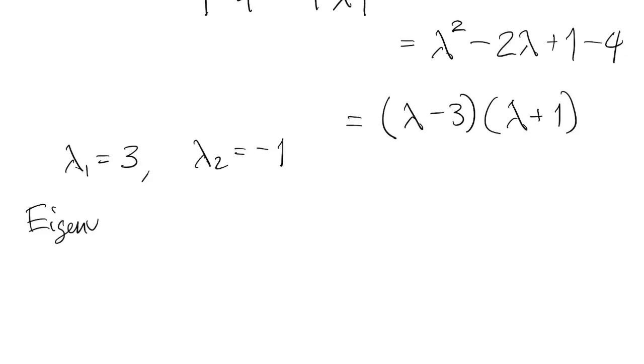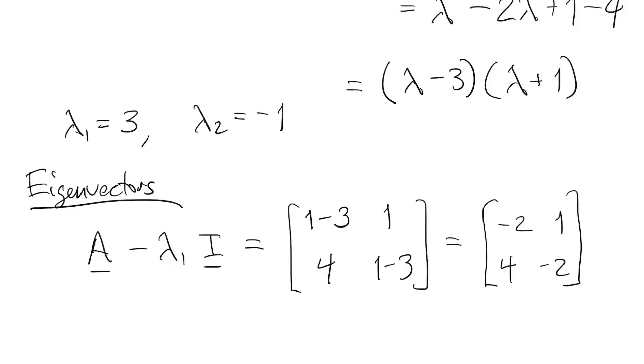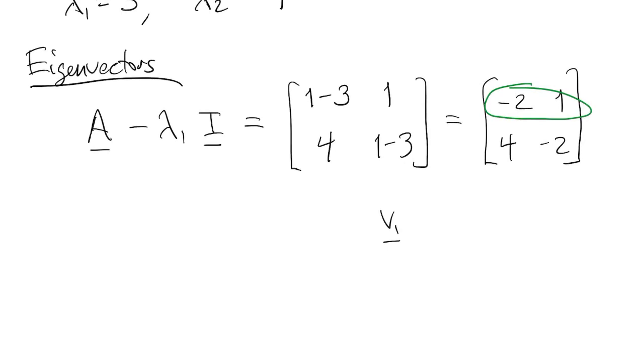Then we have to find eigenvectors to go with them. So we look at a minus lambda 1i. And in the 2 by 2 case, we have this shortcut. Just look at the first row of this matrix, and we can get an eigenvector by reversing the order of those two, and then negating one of those two numbers.